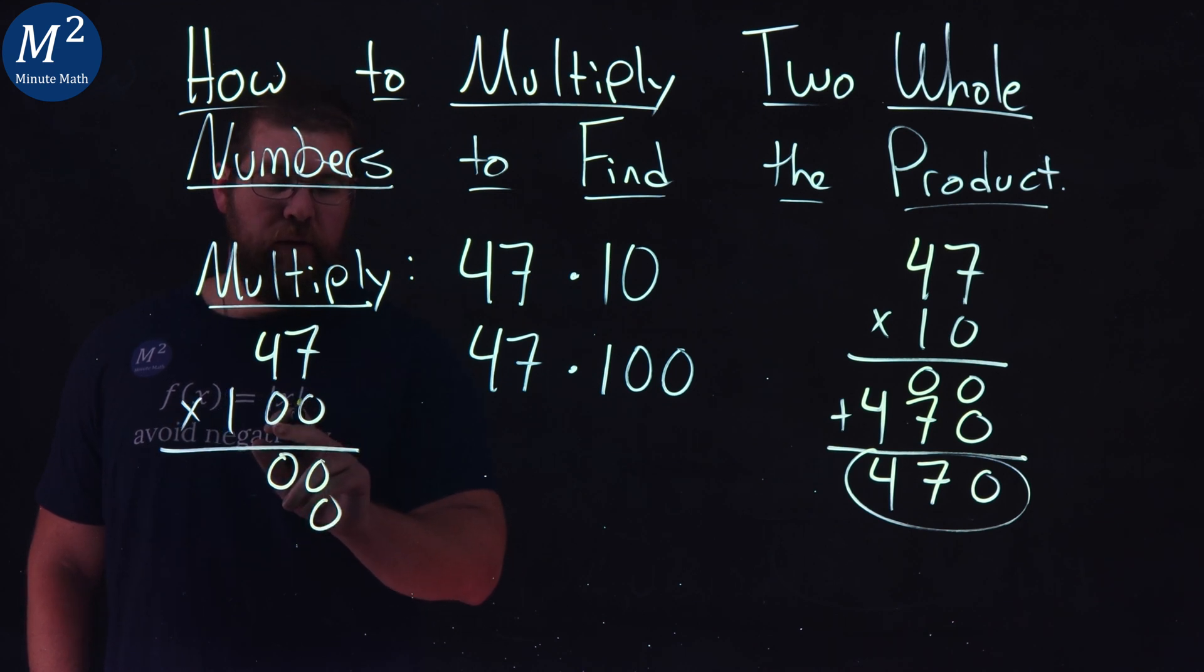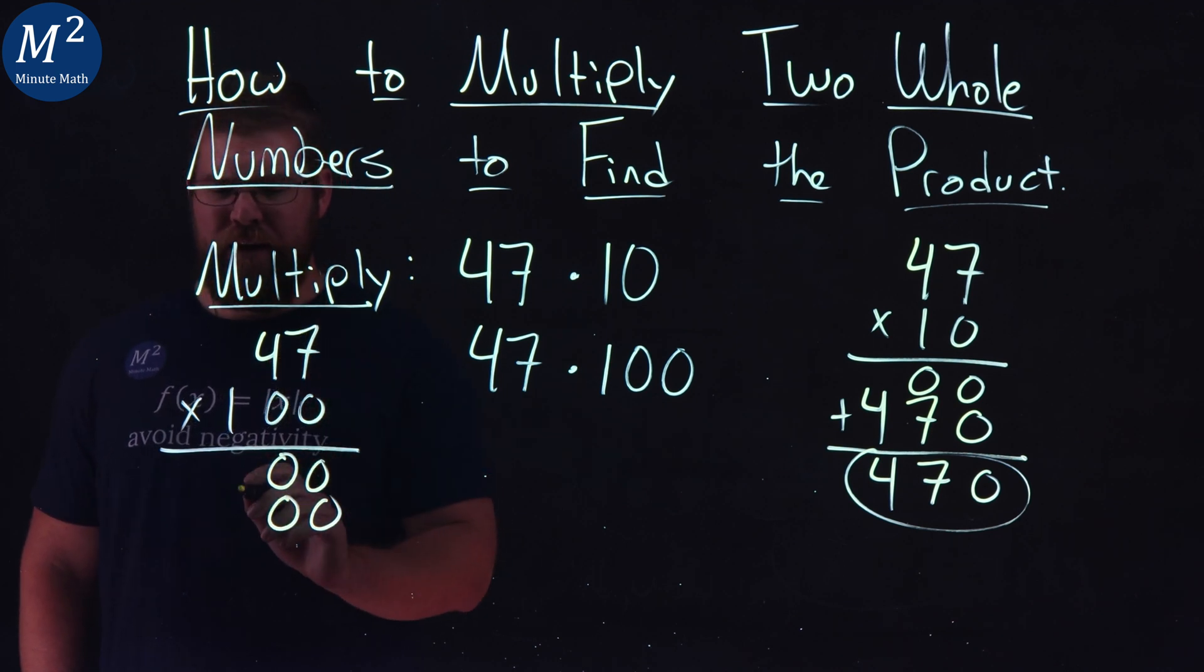Place value here, because now we're in the tens place, we're going to deal with this zero. Zero times seven, again, is a zero. Zero times four, again, is a zero.